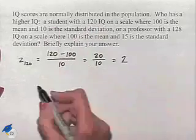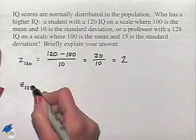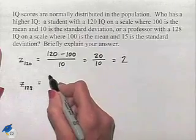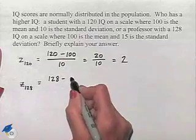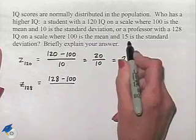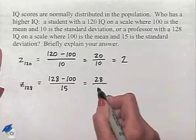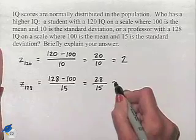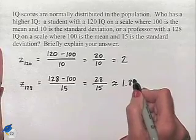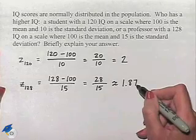Now let's look at the professor's score. We have a Z-score for the 128 that we're trying to find. That's going to be 128 minus our mean, which is 100, divided by the standard deviation of 15. That's going to equal 28 divided by 15, and this is approximately equal to 1.87. So this is now 1.87 standard deviations above the mean.